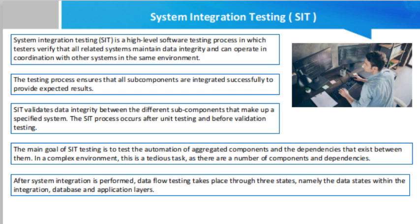The SIT process occurs after unit testing and before validation testing. Due to the fact that SIT concentrates on testing the dependencies between sub-components, it is often subjected to regression testing scenarios. Regression testing facilitates the addition of new test cases from an application perspective. SIT testing focuses on access to actual data passed through the components and initial connectivity. The main goal of SIT testing is to test the automation of aggregated components and the dependencies that exist between them in a complex environment.